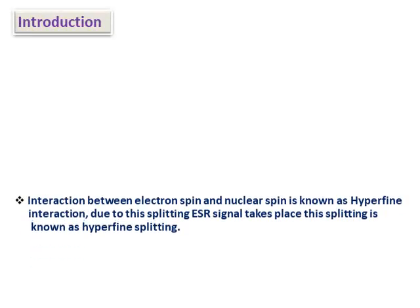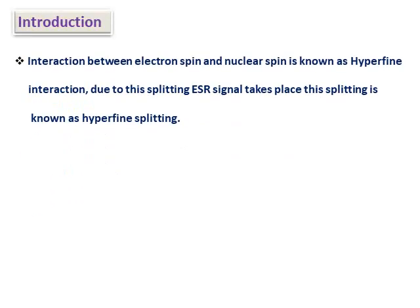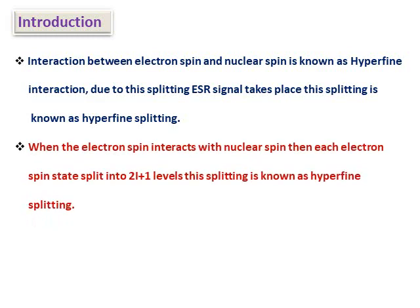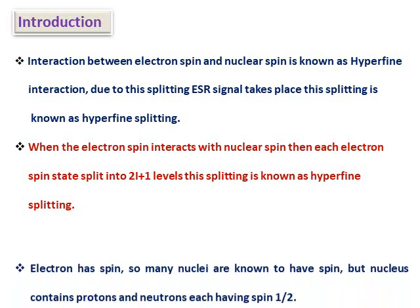Introduction of hyperfine splitting. The interaction between electron spin and nuclear spin is known as hyperfine interaction, and due to this interaction the ESR signal splits — this splitting is known as hyperfine splitting. When the electron spin (ms value) interacts with the nuclear spin (mi value), each electronic spin state splits into 2I+1 levels.